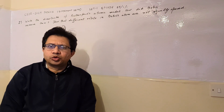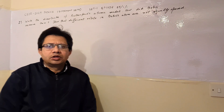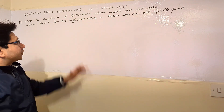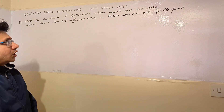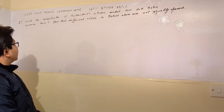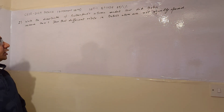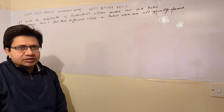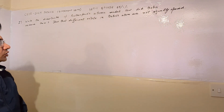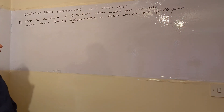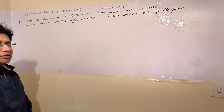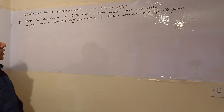Hello students, hope you are doing well. The question is: write the drawbacks of Rutherford's atomic model, how did Bohr remove them, and show that different orbits in Bohr's atom are not equally spaced. This problem is based on the topic of atomic models, specifically the Rutherford and Bohr atomic models.